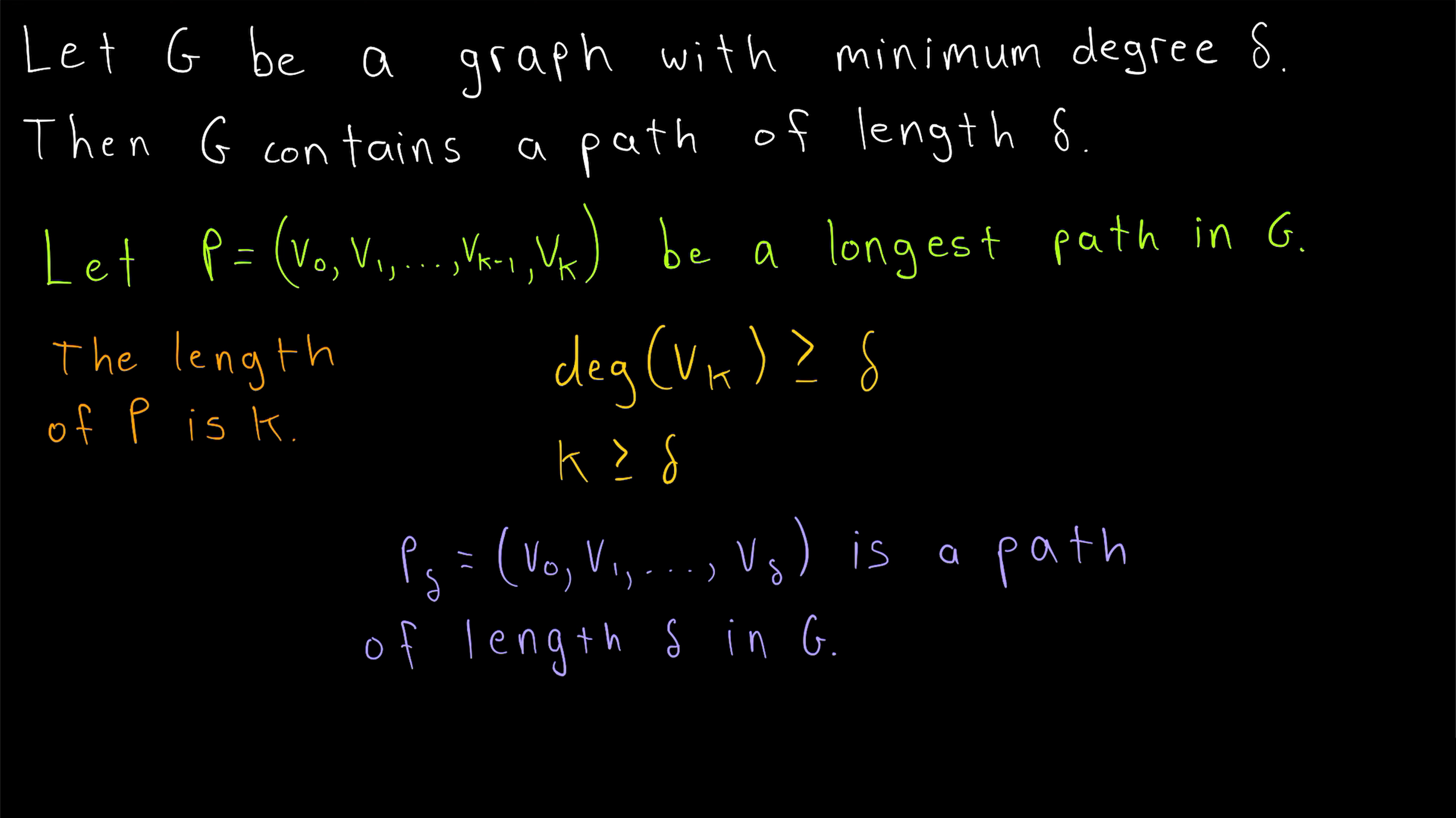And that's how we prove that a graph with minimum degree delta must contain a path of length delta. Pretty nice little result, and I hope this video helped you understand the proof. Let me know in the comments if you have any questions, need anything clarified, or have any other video requests.